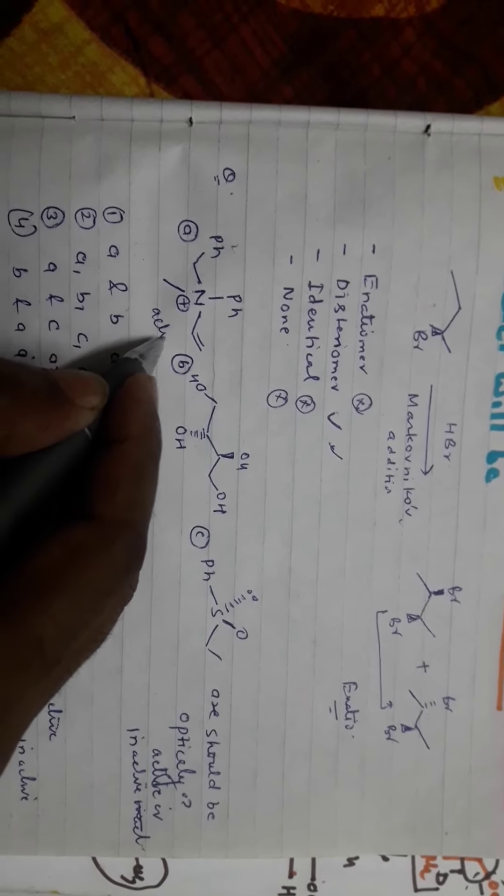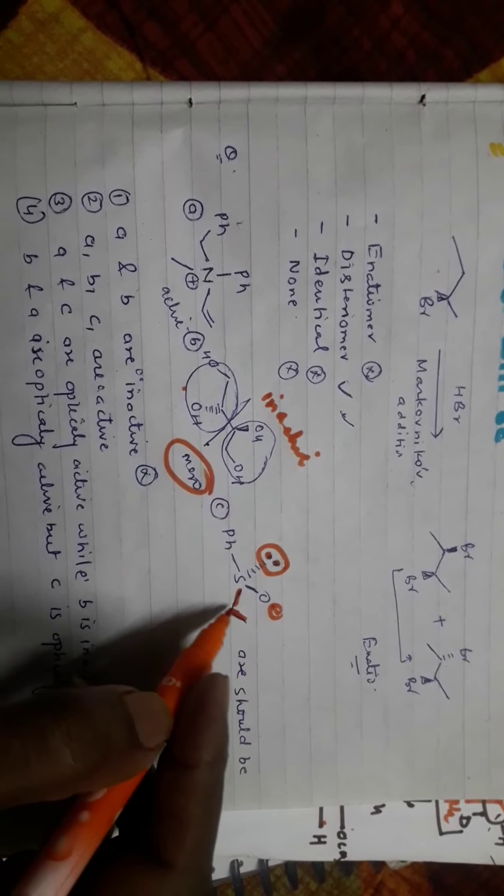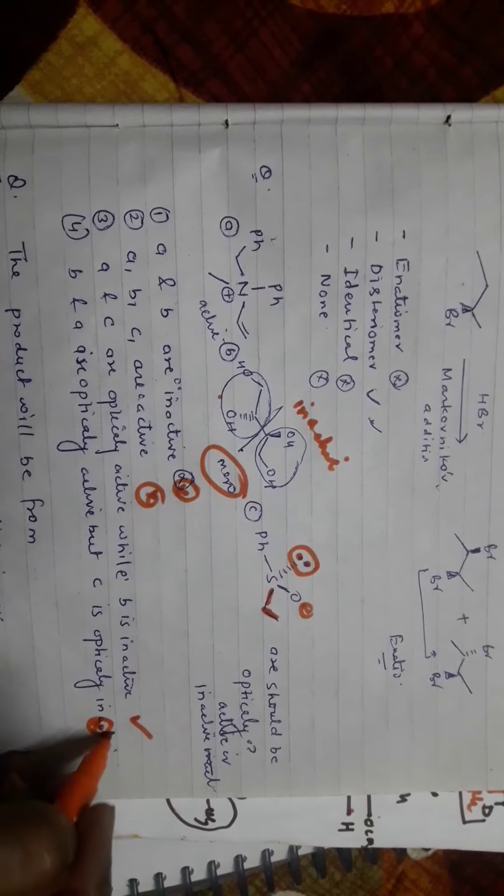Looking at the compounds: A and B are optically inactive. For compound A, there are four different types of substituents present, but it is actually optically active. For compound B, two functional groups are the same and two are also the same, making it a meso form, so it is inactive. The fourth compound includes a lone pair of electrons as a different moiety, so it is also optically active. Therefore A and C are optically active, and B is inactive.